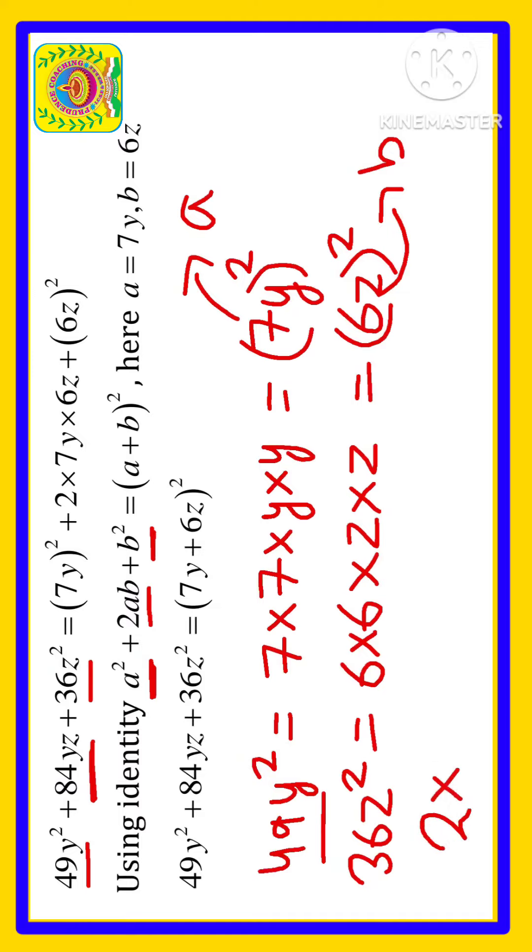Here 2 we are writing, a means 7y and b means 6z. Let us multiply here. We are getting 7 into 2 is 14, 14 into 6 is 84 and yz.